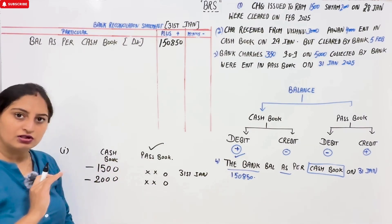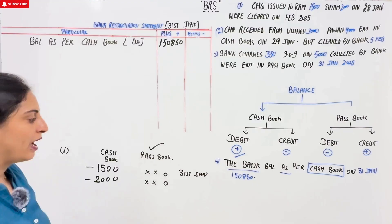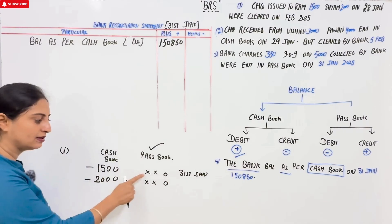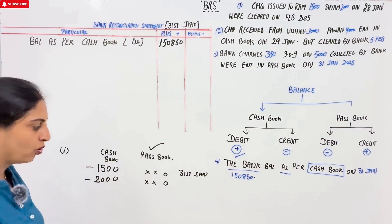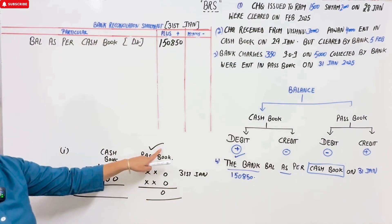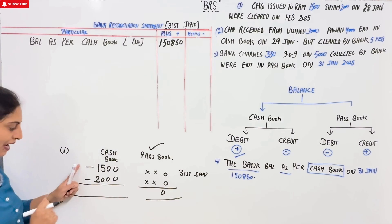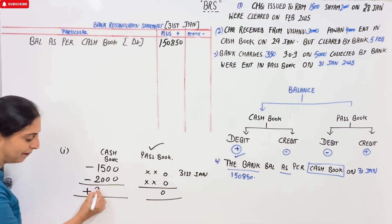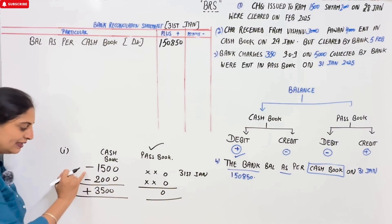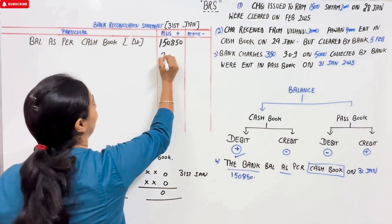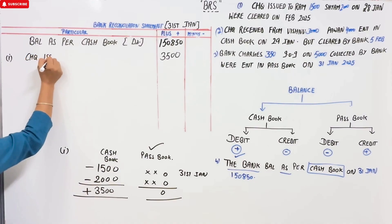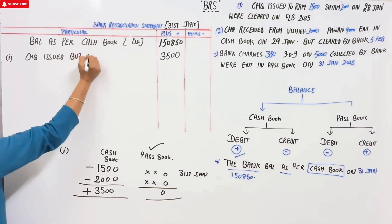So in the passbook, the balance for these checks is zero — they were not minused in January, only in February. Since the passbook balance is zero here, to bring it to the same level as the cash book (where ₹3500 was already deducted), we need to plus ₹3500 in the BRS. So entry number one: 'Checks issued but not cleared' — ₹3500 goes in the plus column.